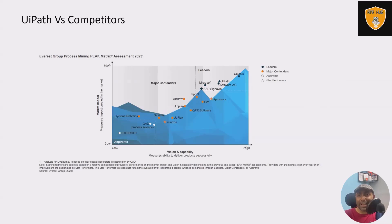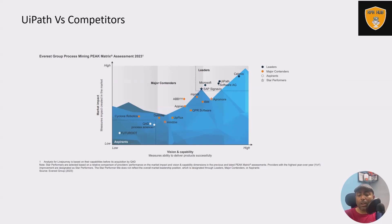If you're using any other Process Mining tool, feel free to add the tool name in the comments section. This report is generated by Gartner, and based on the Peak Matrix or Gartner Report, this is where UiPath is positioned.